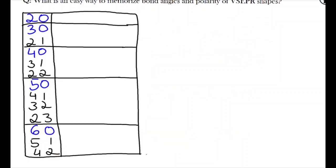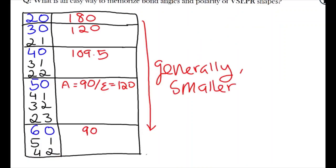Now, let's write in our bond angles. For this method to work, you will need to memorize the bond angles of only the main rows, which is filled in like this. Note that these angles generally get smaller as they move down the chart.